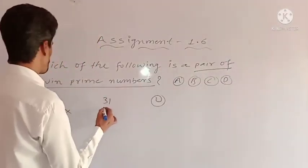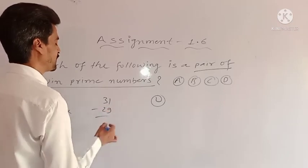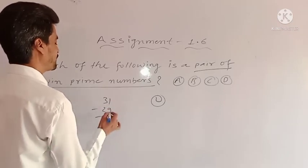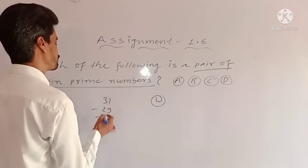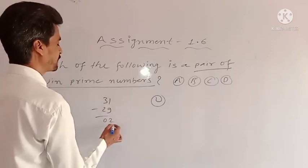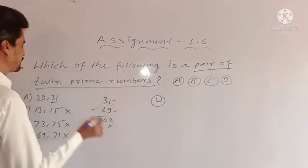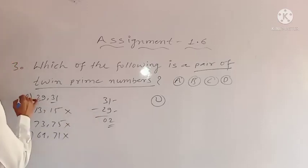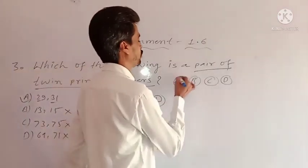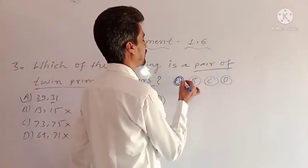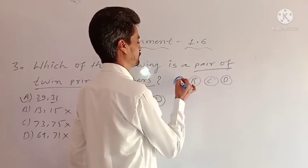So 29 is a prime number and 31 is a prime number. We know the definition of twin prime numbers: the difference between 2 prime numbers is 2 — that is called a twin prime number. 31 minus 29 equals 2. So option A is the correct answer. I am coloring option A because it is our correct answer.